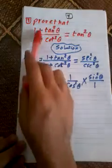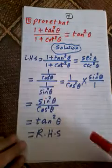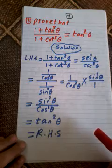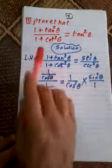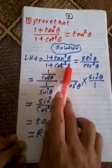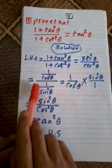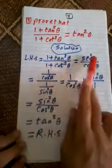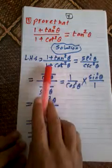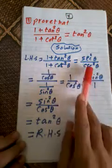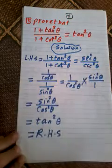Another example: prove that one plus tan squared theta over one plus cotangent squared theta equals tan squared theta. Left hand side: one plus tan squared theta equals secant squared theta by the known rule, and one plus cotangent squared theta equals cosecant squared theta by another rule.